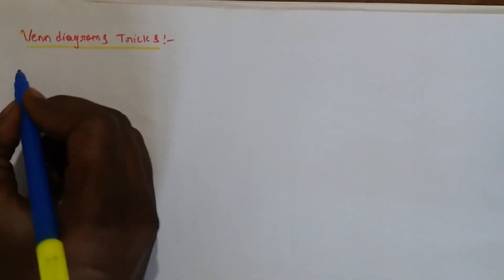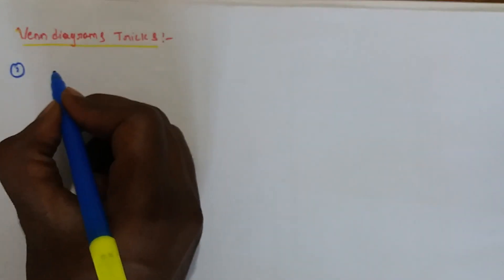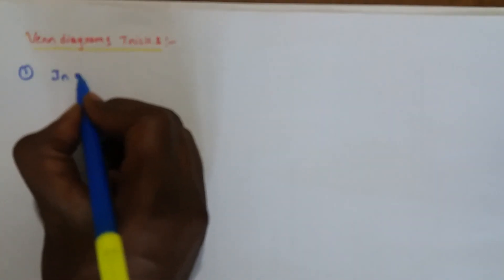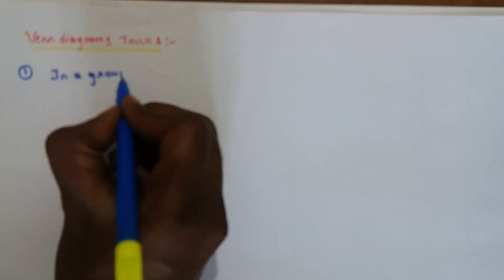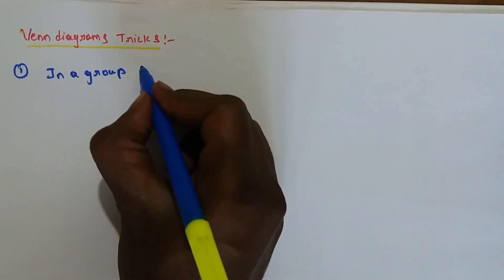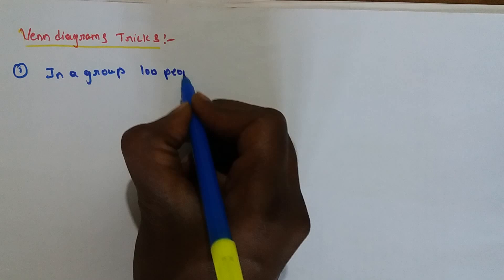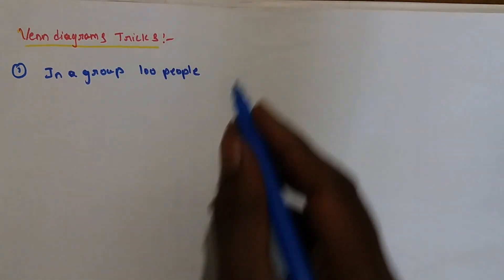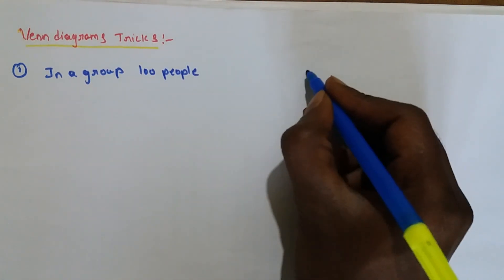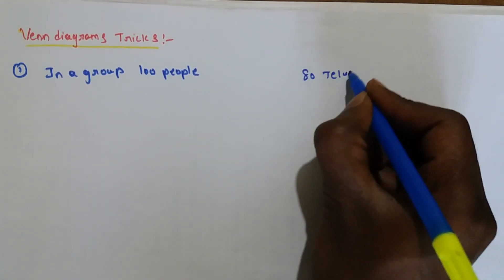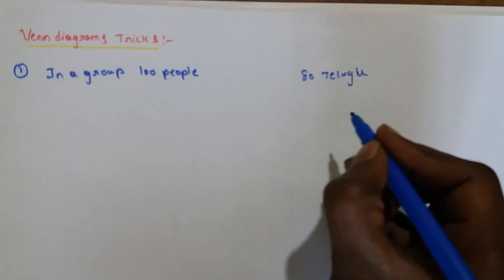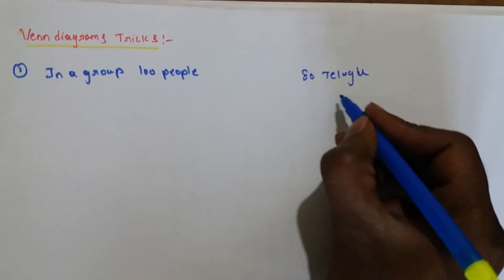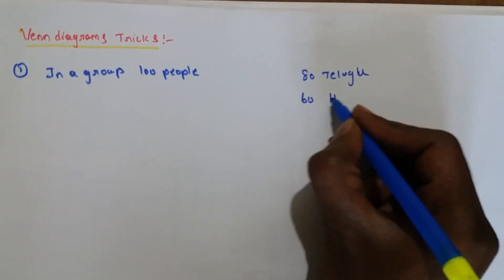Now we are going to see the Venn Diagram tricks. Let's look at the first example. In a group there are 100 people, 80 are speaking Telugu and 60 people are speaking Hindi.